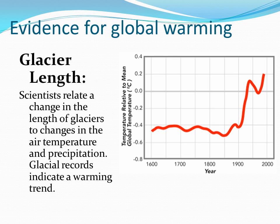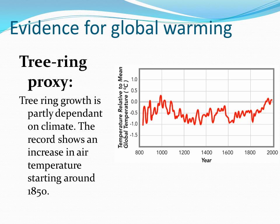Take a look at the red line — we can see we hit about 1850 and start climbing. The tree ring proxy: tree ring growth is partly dependent on climate. The growth record shows an increase in air temperature starting around 1850.